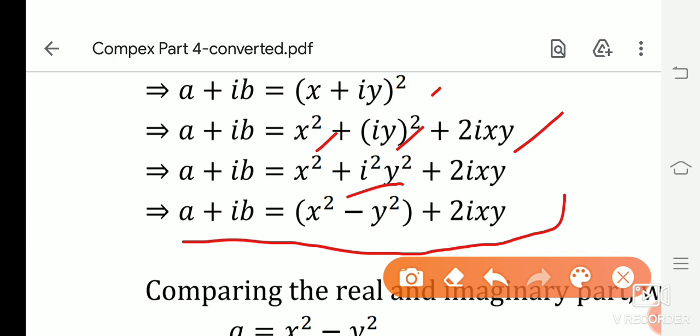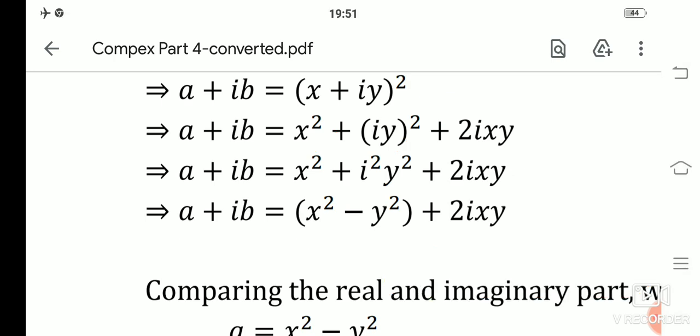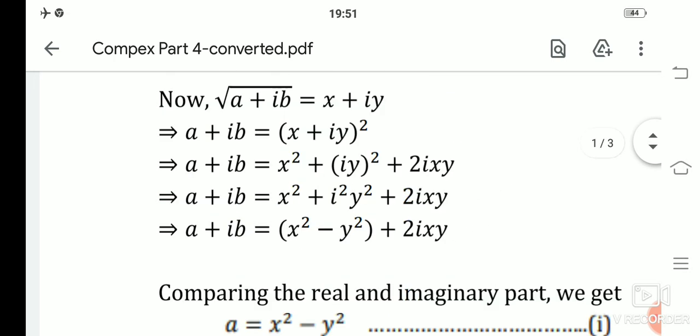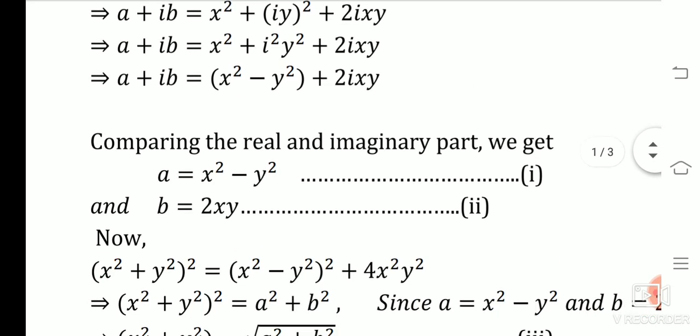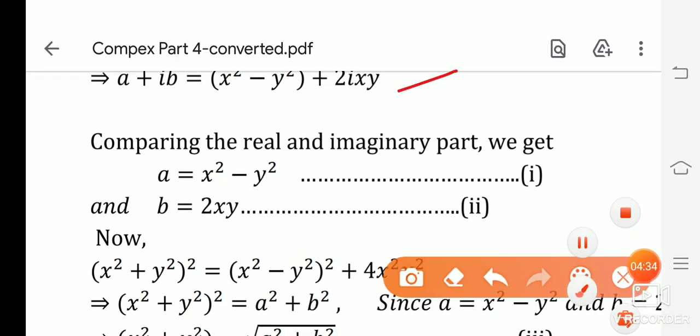We take the real part on one side and the imaginary part on the other side, then compare both sides. Comparing real and imaginary parts, we get: a = x² − y²  and  b = 2xy. These are our key equations — call them Equation 1 and Equation 2.